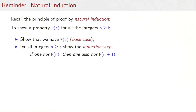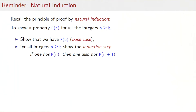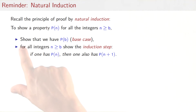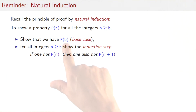To introduce structural induction, it's good to first look at its close sibling, natural induction. Natural induction is a proof principle that you apply when you want to prove something for all integers greater or equal to some smallest integer b. The idea is that to show a property holds for all such integers, you just need to show that it holds for the smallest element b — the base case.